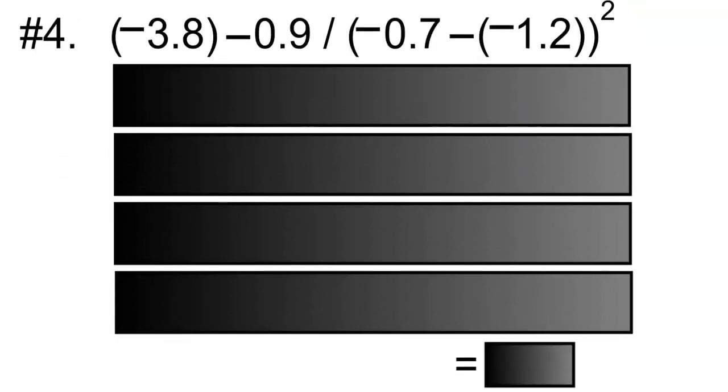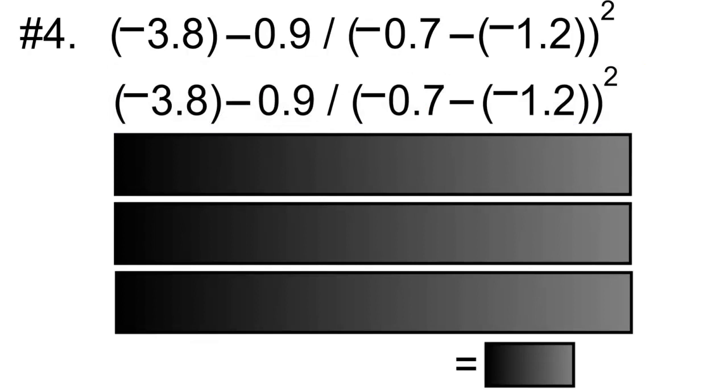Step number one in BEDMAS is going to be the operations within brackets. We have one operation within brackets, which is negative 0.7 minus negative 1.2. We'll change this to an addition equation. So we have negative 0.7 plus the opposite integer of negative 1.2, which is positive 1.2.